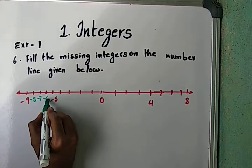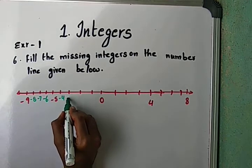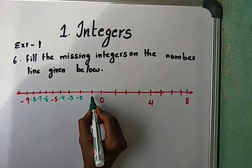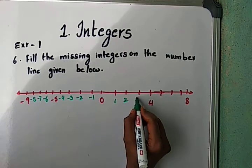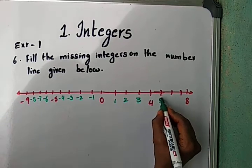After zero: 1, 2, 3, 4, 5, 6, 7. That's it for the first number line.